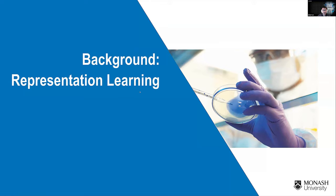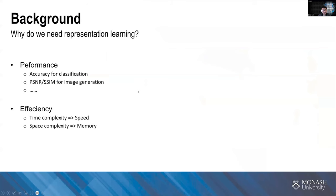Before everything starts, I need to introduce some background of our work, which is about representation learning. Why do we need representation learning? When modeling with deep learning, we care about two things: performance — like accuracy for classification or visual quality metrics like PSNR or SSIM — and efficiency, such as training or inference speed or memory consumption. Normally these are trade-offs: a large model has better performance but worse efficiency; a small model is faster but performance drops.